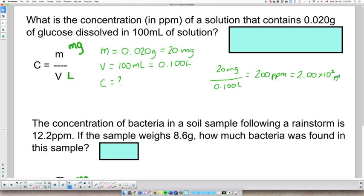Now, I still haven't addressed the significant figures. So I can only keep two. So I'm going to keep this digit and this 0, and this one gets dropped. So my real final answer is 2.0 times 10 to the 2 ppm.